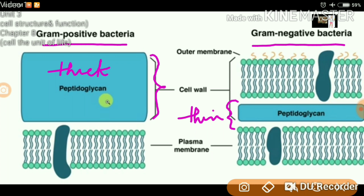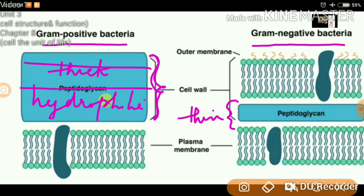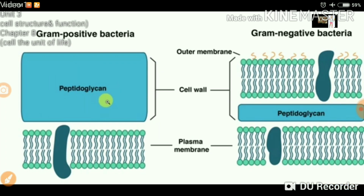This is why gram-positive bacteria became dark purple in color. The thick peptidoglycan is hydrophilic in nature — meaning it is water-loving, so it absorbs water-soluble substances. This stain is water-soluble, and because of the thickness, it absorbs more pigment and becomes dark purple. But in gram-negative bacteria, the peptidoglycan is very thin, so it absorbs only a small amount of that pigment and becomes pink in color.